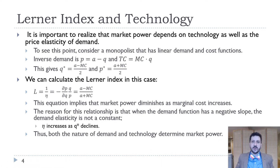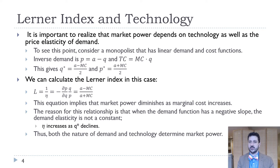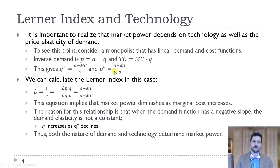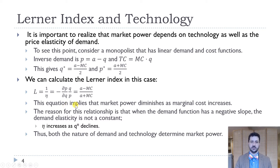The Lerner Index can really depend on technology — both the cost function of the firm and also the demand function. For example, with a monopolist with a linear demand and cost function, we have our standard inverse demand P equals A minus Q, and total costs are just marginal cost times Q. That gives monopoly quantity equal to (A minus MC) over 2, and monopoly price equal to (A plus MC) over 2. So we can calculate the Lerner Index as (A minus MC) over (A plus MC).